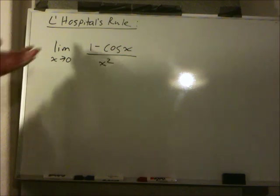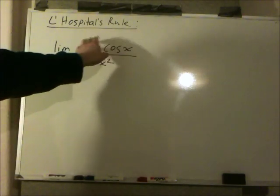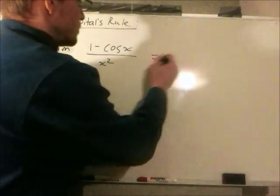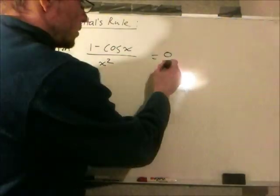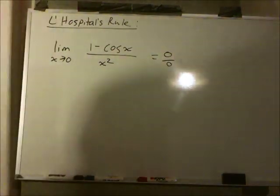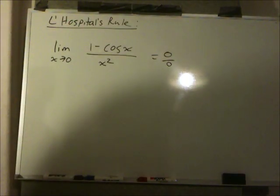So our first step will be to just directly substitute in our limit and see what happens. Cosine of 0 is 1, 1 minus 1 is 0. 0 squared is 0. So we have a bit of a problem here. We have an indeterminate form of 0 over 0, which implicates our dear friend L'Hopital and his most wonderful rule.